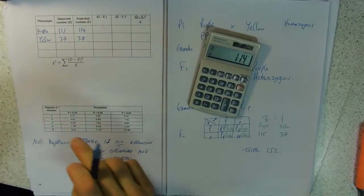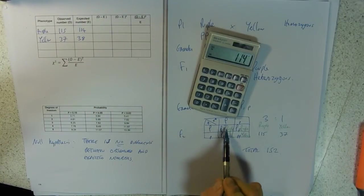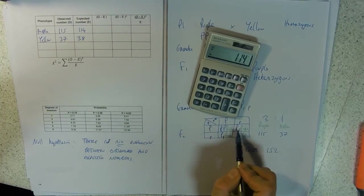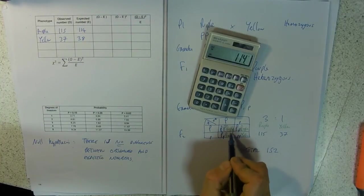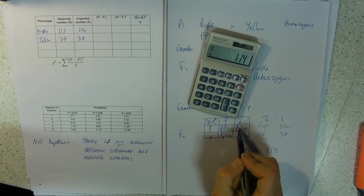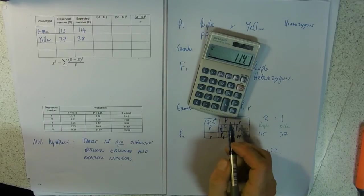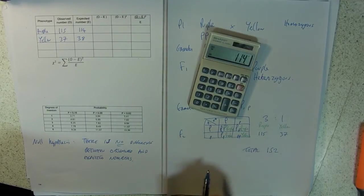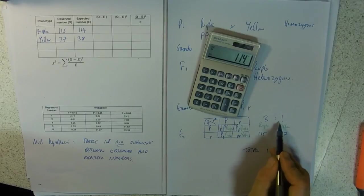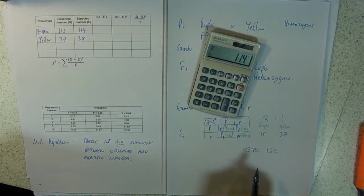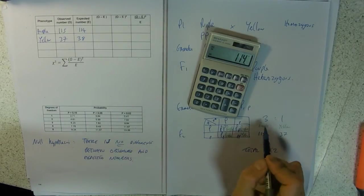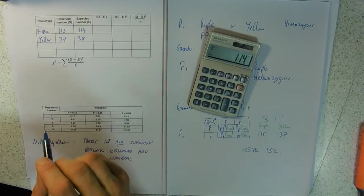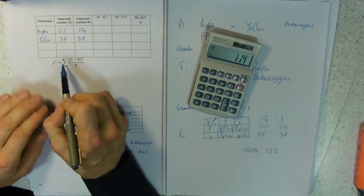That should be 38 yellow, and times that by three gives 114 purple. Our Punnett square's got four boxes in, so we divide our 152 by four and then times it by whatever the ratio is - times the yellow by one, times the purple by three.